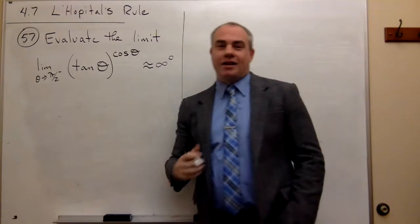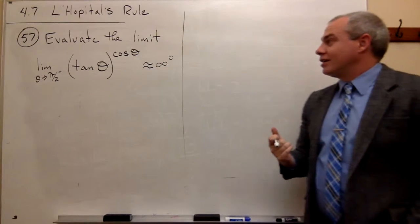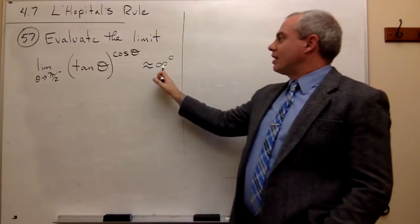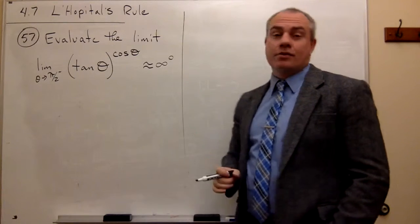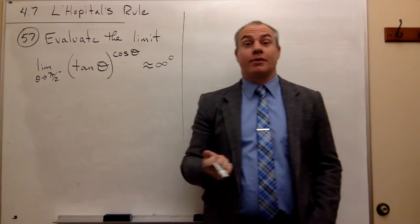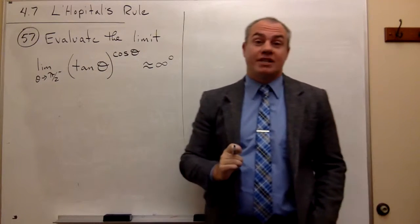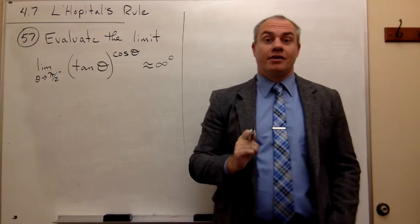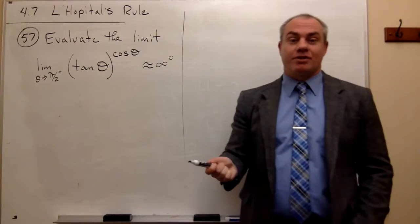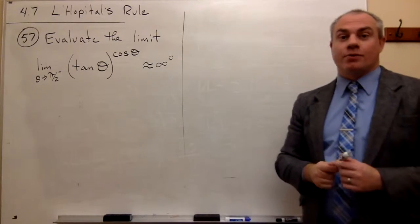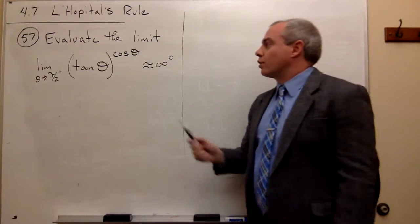So we've got an infinity raised to the zero power, and that doesn't make a lot of sense. When infinity is raised to a power, typically we get infinity. But when anything is raised to the zero power, we typically get 1. So is it infinity? Is it 1? Is it something in between? We don't know yet — that's what we need to figure out.